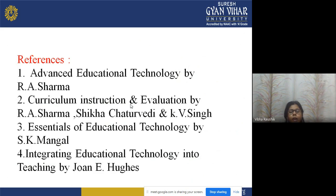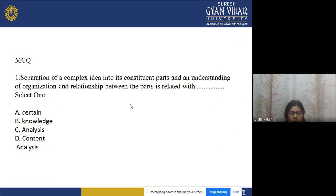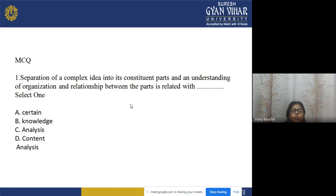Today we have covered the objectives, central tendencies — mean, mode, and median — range, and standard deviation. For further reading, record the listed references. Now let's discuss some practice questions. Question 1: Separation of complex ideas into constituent parts and understanding the organization and relationship between parts is related to which Bloom's taxonomy level? Options: a) synthesis, b) knowledge, c) analysis, d) content. The correct answer is option c — analysis.